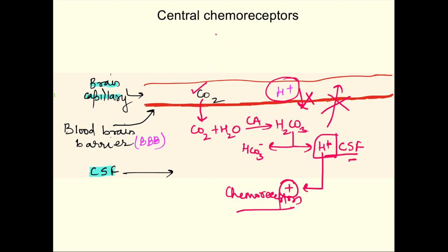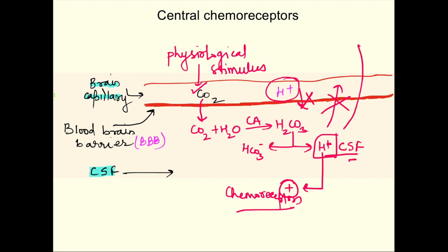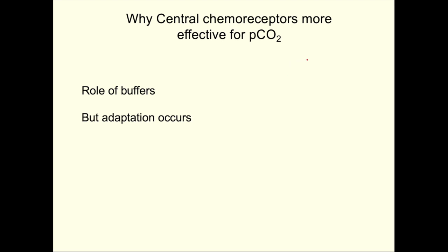The physiological stimulus for central chemoreceptors is arterial pCO2, while the primary (direct) stimulus is H+ ions in the CSF. Central chemoreceptors are more effective for detecting pCO2 changes than peripheral chemoreceptors because in the periphery there are many protein buffers, whereas CSF has very low protein concentration (proteins cannot cross the blood-brain barrier), making the H+ response in CSF more pronounced.